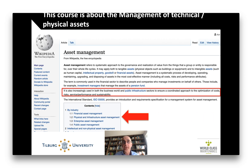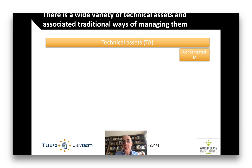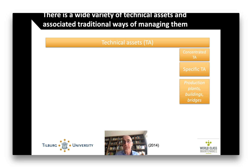Talking about technical assets, there is a whole wide variety. I use the typology developed by Klaas Schmidt here in the Netherlands for explaining how wide that is. First of all, there are assets that are in one place — concentrated technical assets, as Schmidt calls them. Things like production plants, buildings, bridges — stuff that is in one place, that needs to be maintained and that needs to have an optimal life.